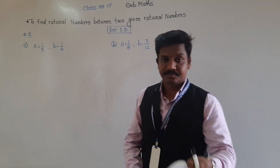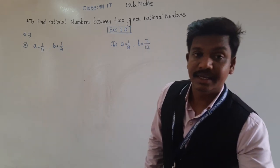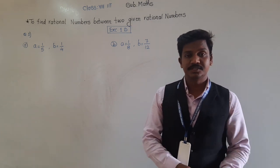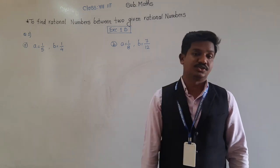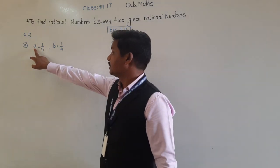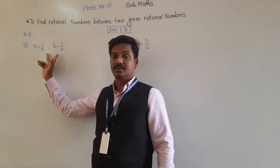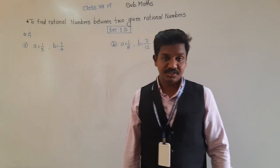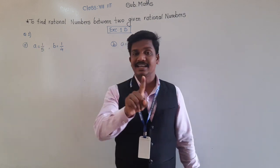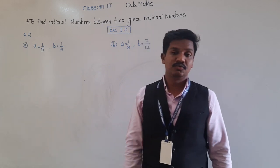The first question is: find a rational number between A and B, where A = 1/5 and B = 1/4. We have to find only one rational number between these two given rational numbers.